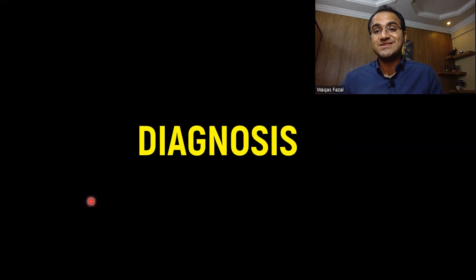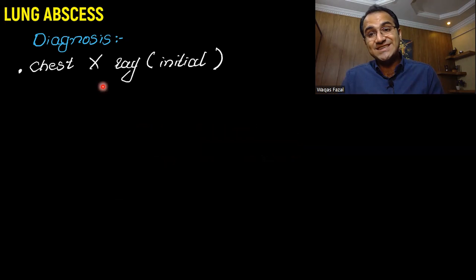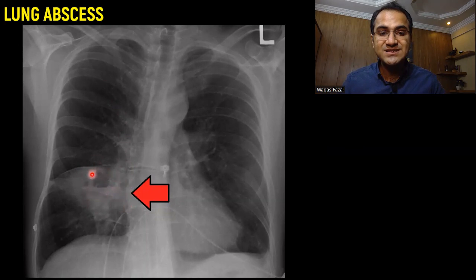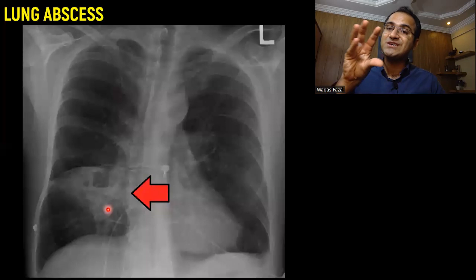Coming to the diagnosis of lung abscess: chest X-ray is the best initial test, the first test you would order. On chest X-ray, you would see an air-fluid level — this is the fluid and this is the air — showing an abscess, a pus-filled cavity.